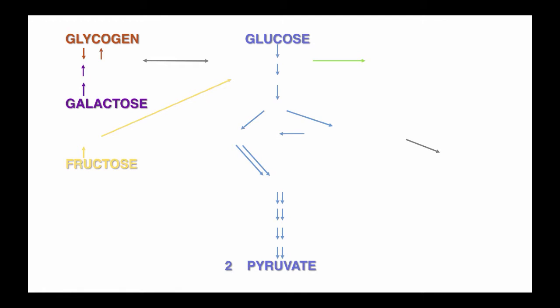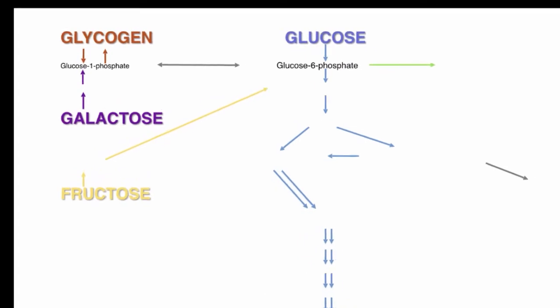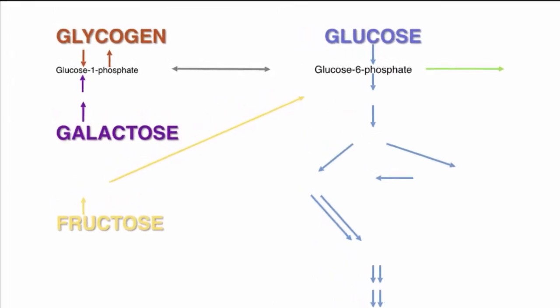Here we will break it down into very simple terms — just the starting sugars and the pyruvate. If you notice, there are two pyruvate products for any one of these sugar molecules. We first have to understand that most sugars get turned into glucose 6-phosphate, which just means there is a phosphate added to the glucose on the number 6 carbon.